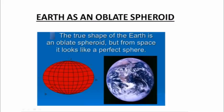Earth is an oblate spheroid. The Earth is said to be spherical, but it is not a perfect sphere. The true shape of the Earth is an oblate spheroid, but from space, it looks like a perfect sphere.